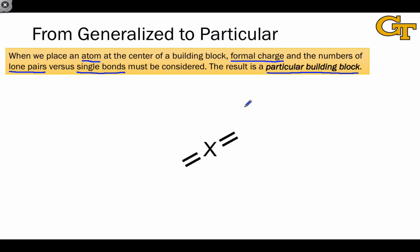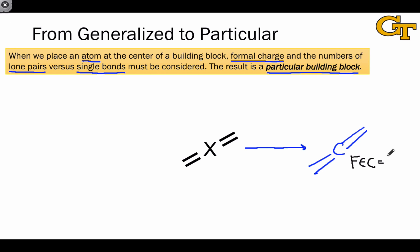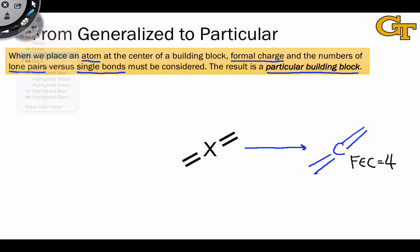To give an example, we can take the two-electron pair domain building block with two double bonds and think about adding a carbon atom at the center. Now the carbon in this structure has a formal electron count of 4, and so its formal charge is neutral, and we can simply leave the building block as is. But if we add a different atom to the center, the situation changes.